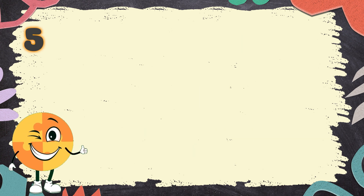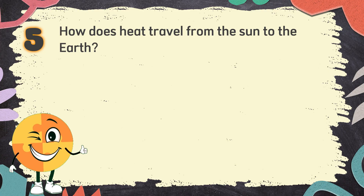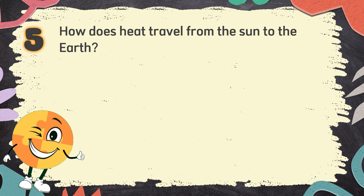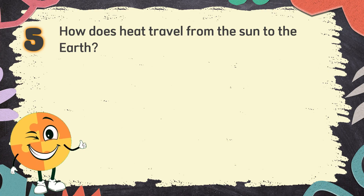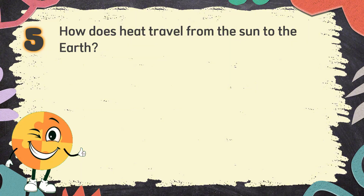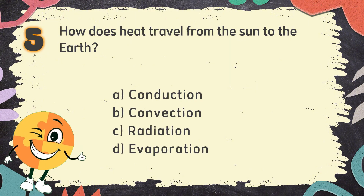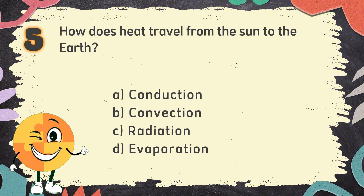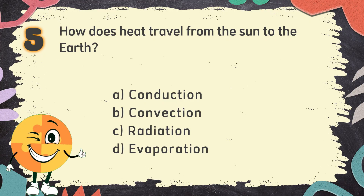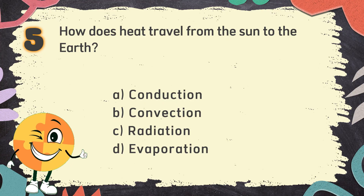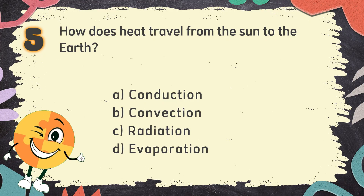Number 5. How does heat travel from the sun to the earth? The choices are: A. Conduction, B. Convection, C. Radiation, D. Evaporation.